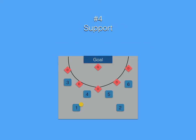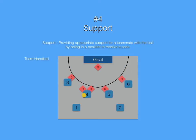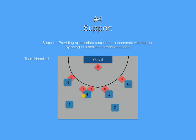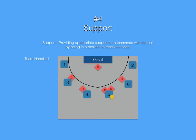Our fourth game component is support. Support is providing appropriate support for a teammate with the ball by being in a position to receive a pass. Again, our example is team handball. We make our first pass; the defenders converge. No one is in position to receive a pass. Player 1 and 2 have now provided support. No one's in position again to receive a pass. Players number 3 and 6 have now provided support.